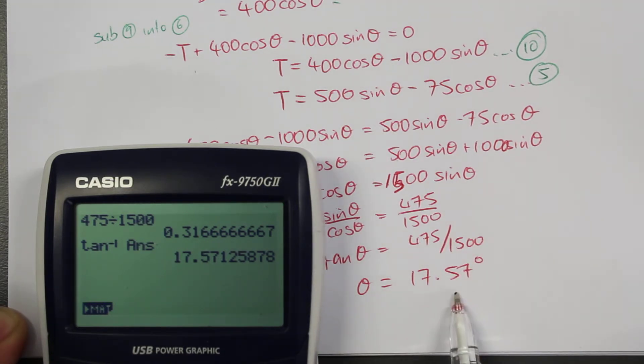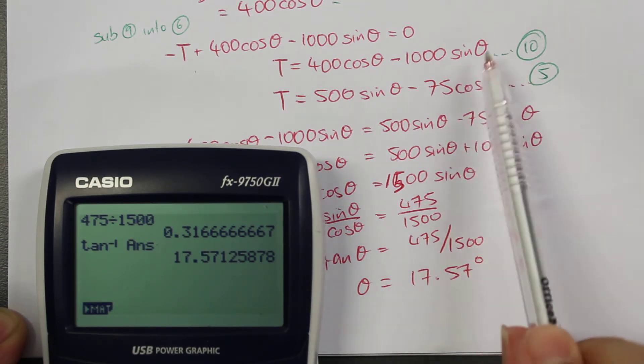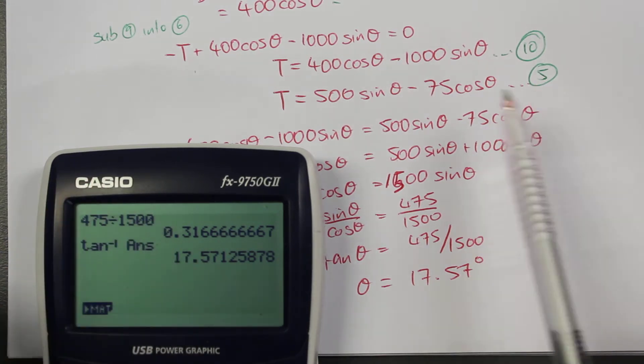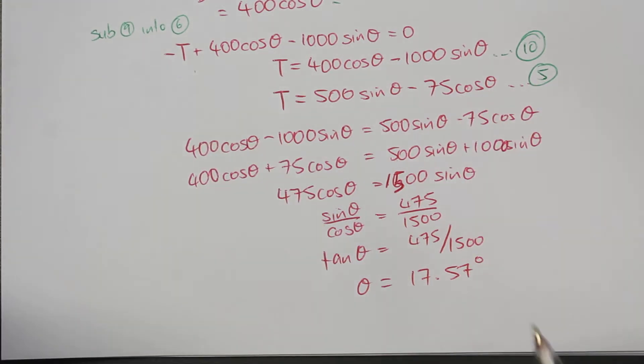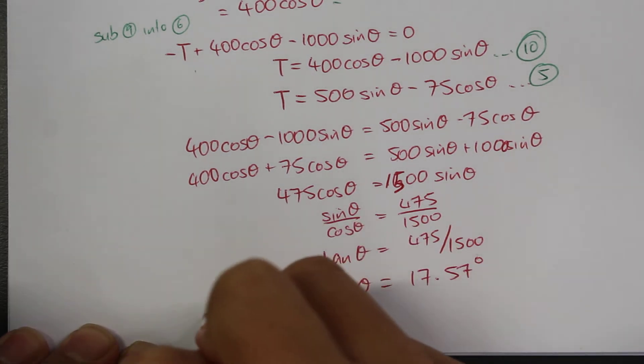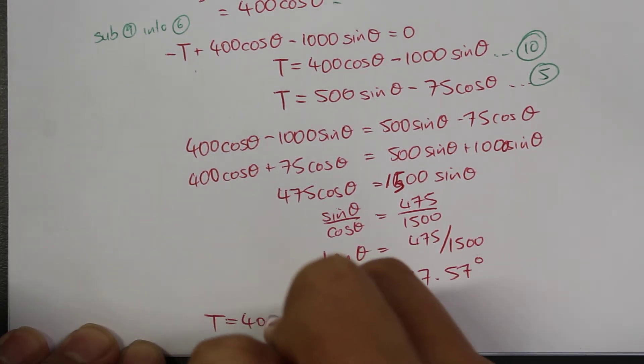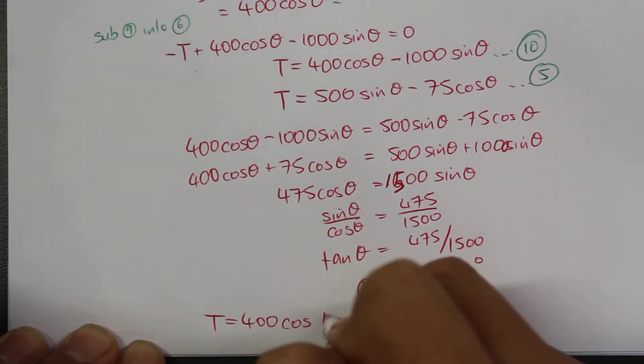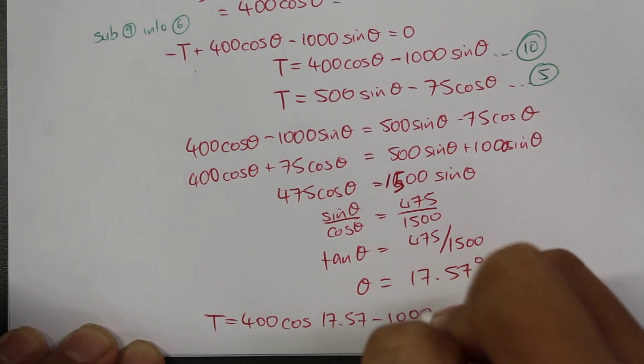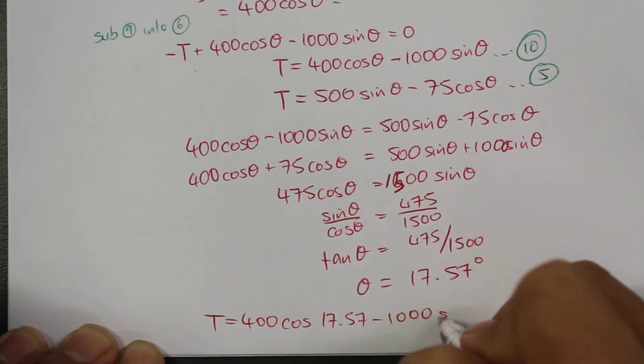We can select either equation 5 or equation 10. I will select equation number 10. So T equals 400 times cosine theta, which is 17.57, minus 1000 times sine 17.57.